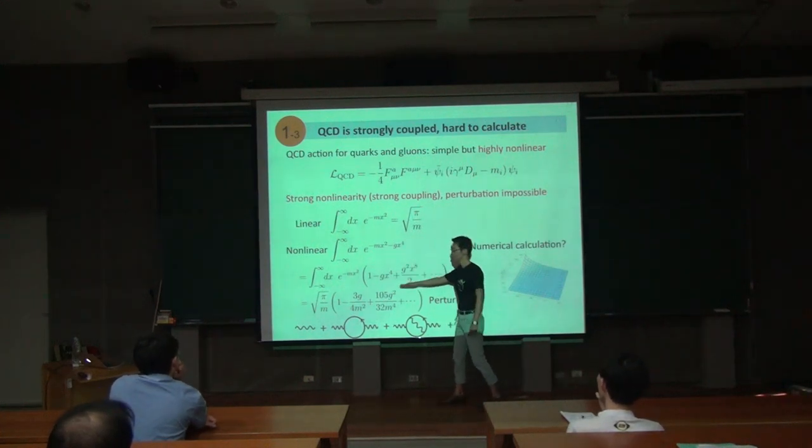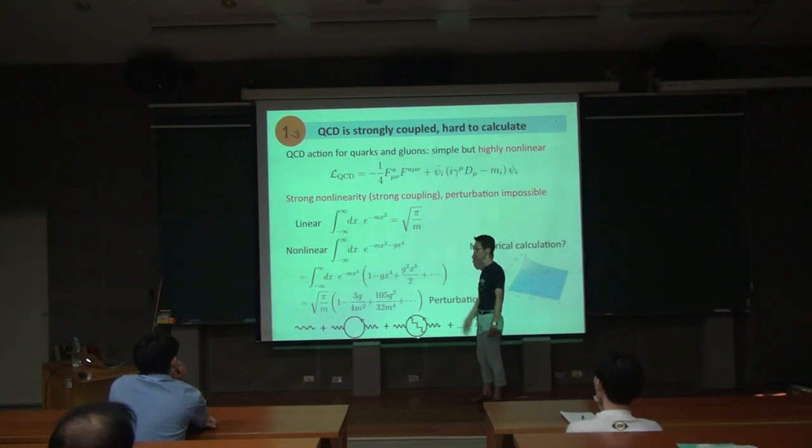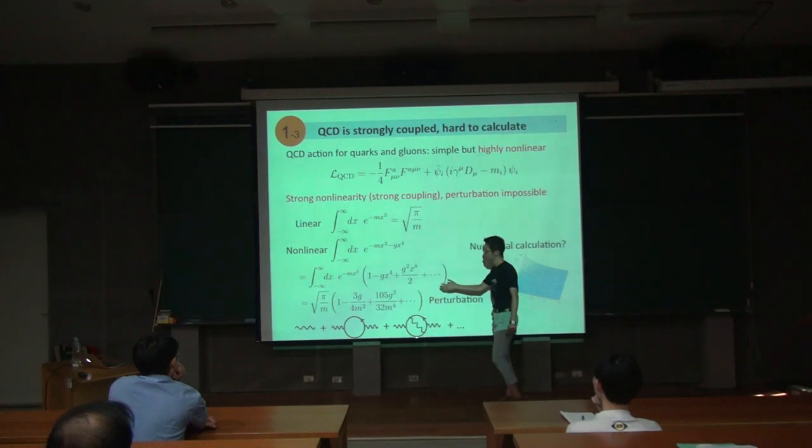And then you can compute term by term. It's a gx tangent, and you get this result. And of course, this result is applicable only for small g.